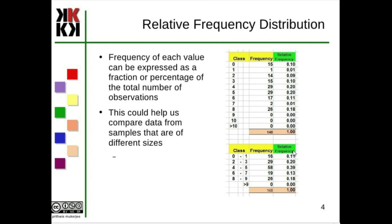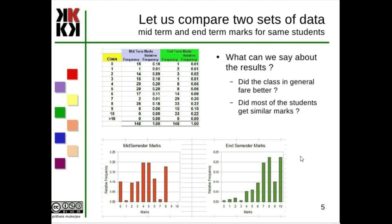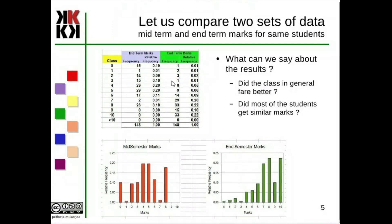Relative frequency always sums to a total of one. Let us compare two sets of data: midterm and end-term marks for the same students. What can you say about this result — is the class in general doing better?